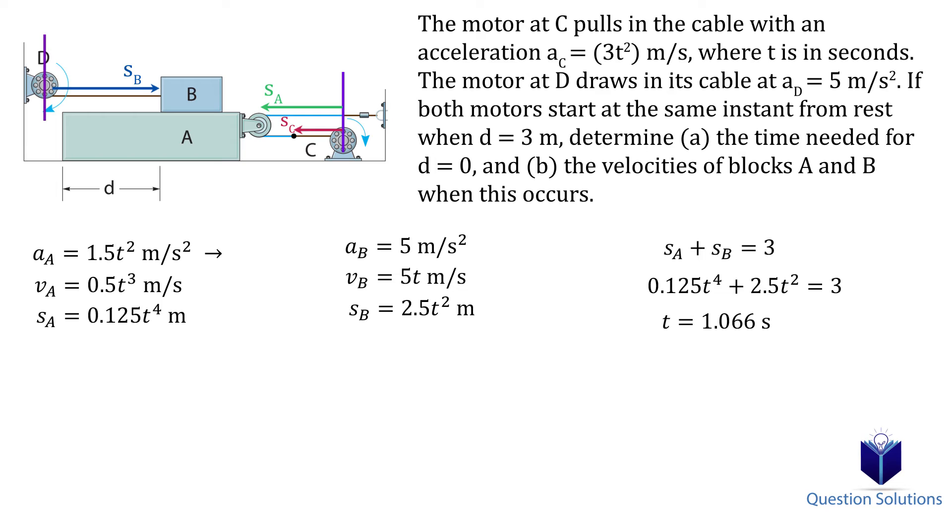Part B asks us to find the velocities of each of the blocks A and B when this occurs. We just need to plug the time value into the velocity equations we found earlier. Plugging them in and solving gives us the velocity of each of the blocks.